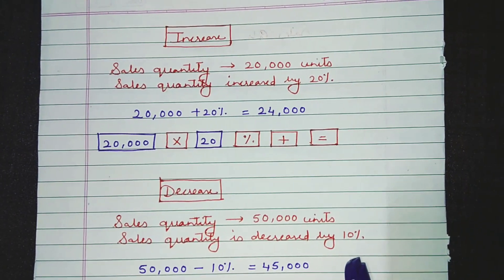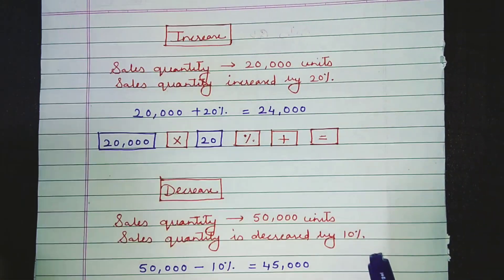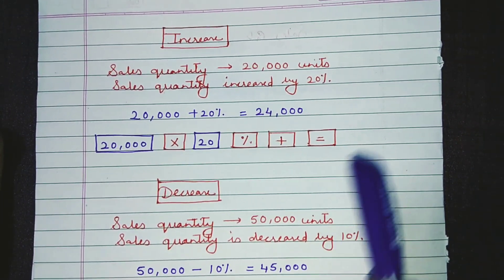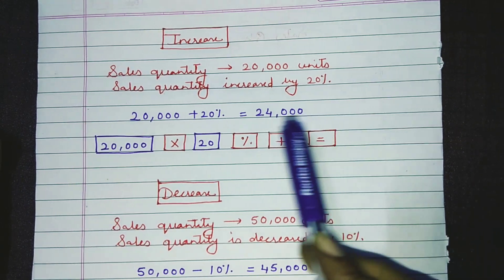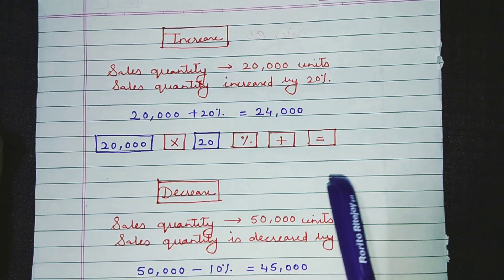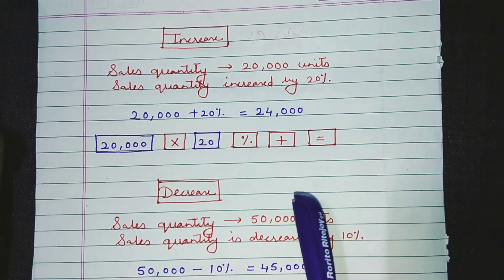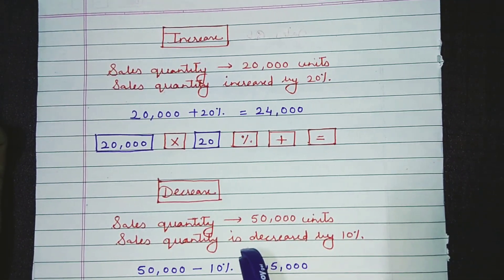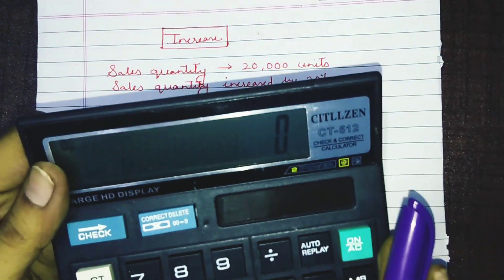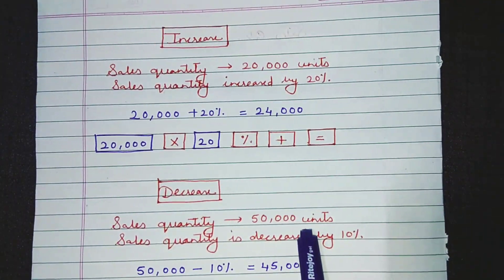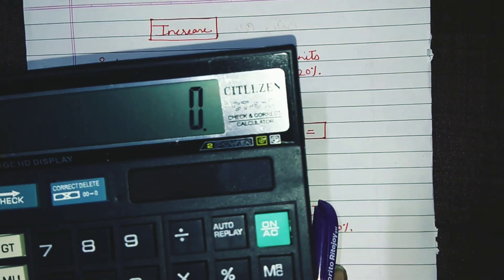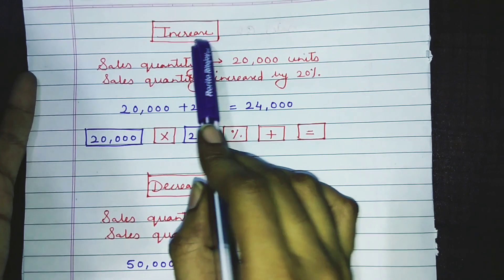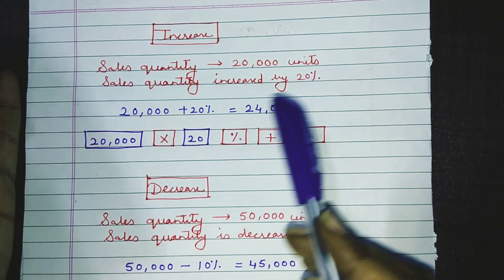I'm Professor Savita Burke, and welcome to another lecture on tricks of your simple calculator. In financial management, you have so many calculations, particularly in the sales budget — related to increase and decrease in sales quantity or sales price. BMM students feel these are difficult calculations, but they are very simple if you use a simple calculator. I'm going to show you a simple trick for how to use this calculator for your sales budget.